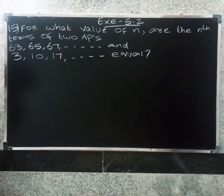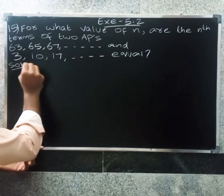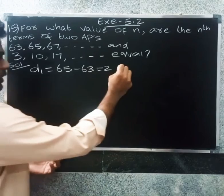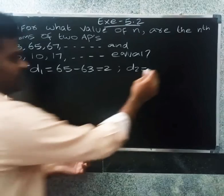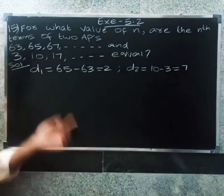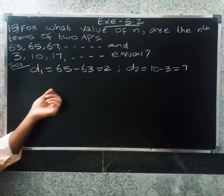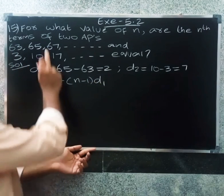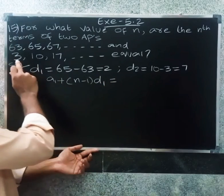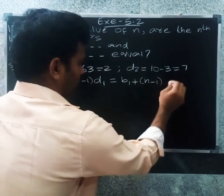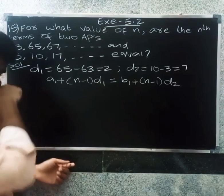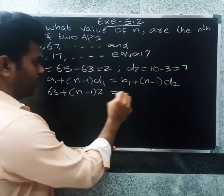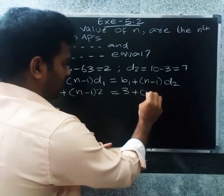Let's first find this term. So let's do our first AP. So for AP 1, the difference d1 equals 65 minus 63 equal to 2. Next difference d2 equals 10 minus 3 equal to 3. So for both APs: AP 1 equals a1 plus n minus 1 times d1, and AP 2 equals b1 plus n minus 1 times d2.